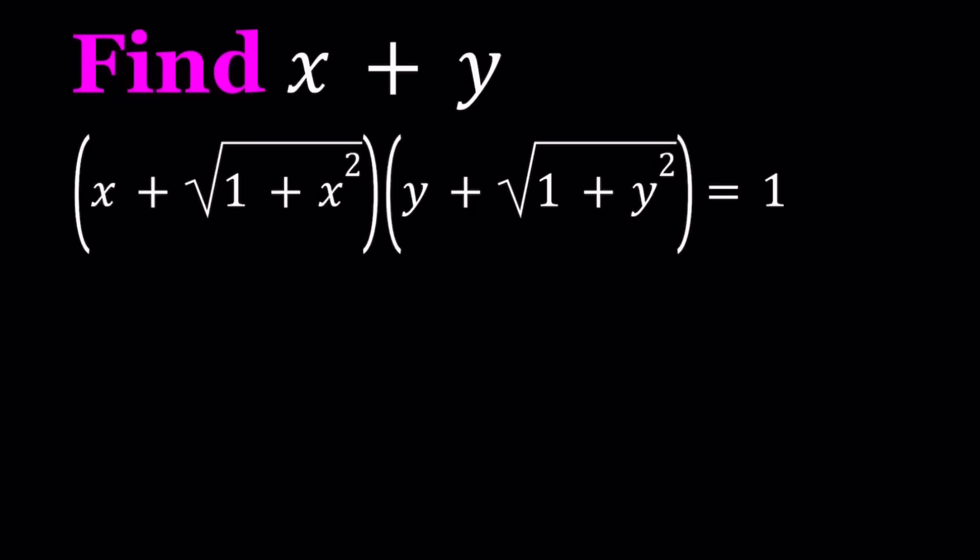Hello everyone. In this video we're going to be solving an interesting algebraic problem. We have x times the square root of 1 plus x squared, multiplied by y plus the square root of 1 plus y squared, equals 1. And we're going to find x plus y from here. There are a lot of approaches you can take, such as replacing x or y with certain values, but you also have to show that x plus y is always a constant. I'll be presenting two methods. Let's start with the first method.